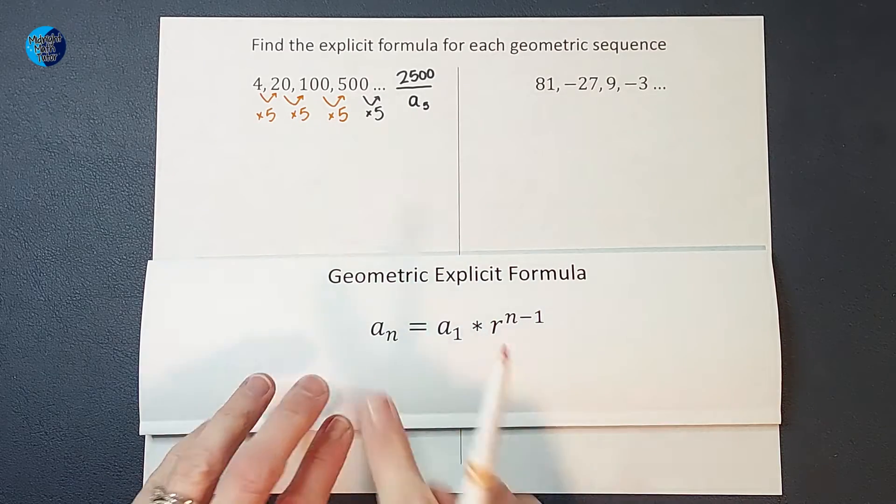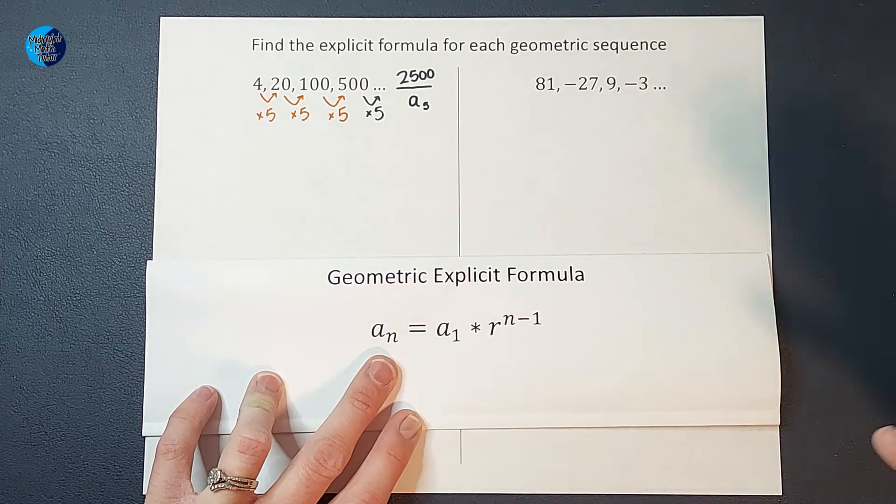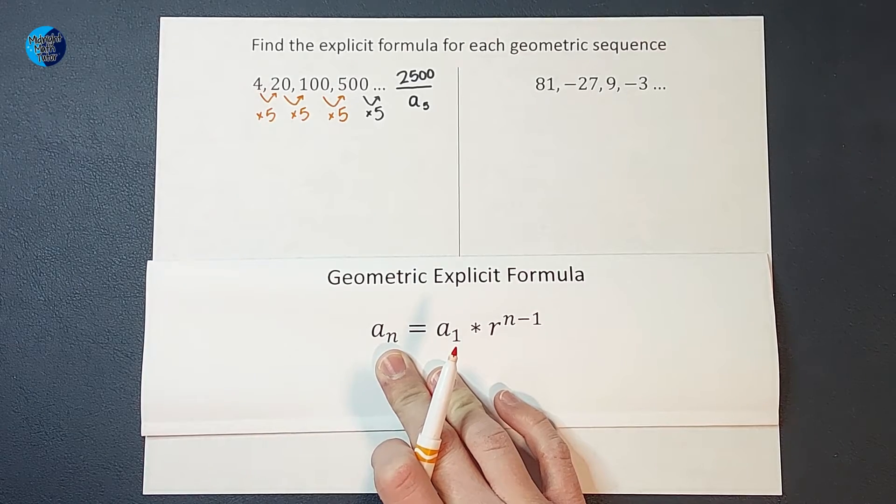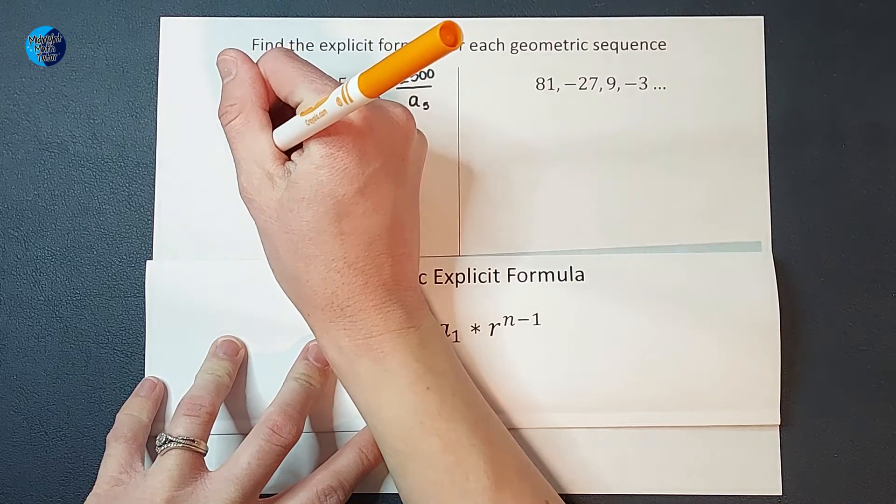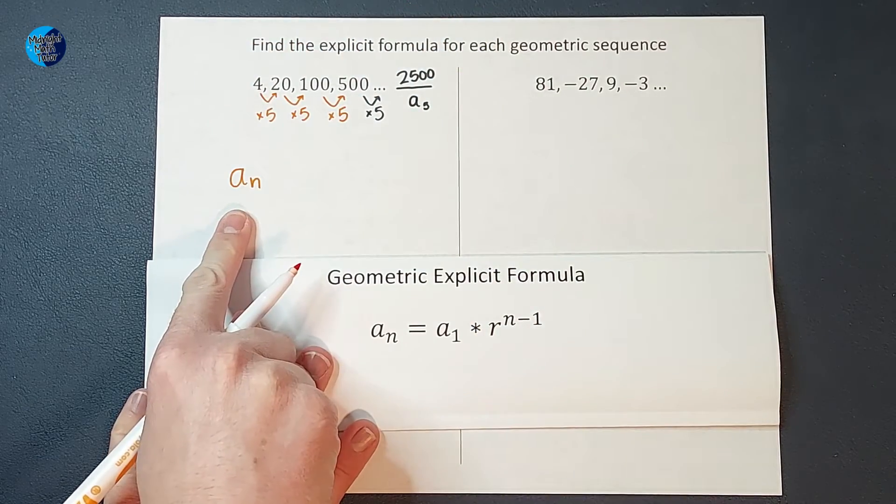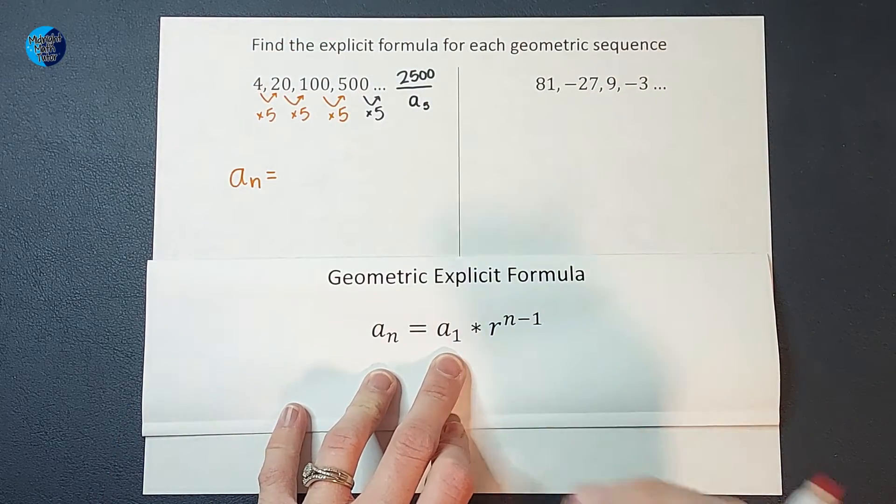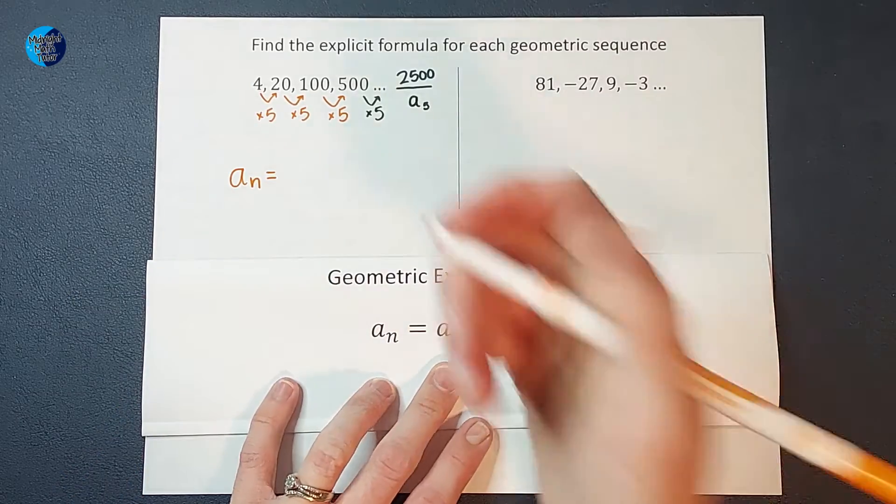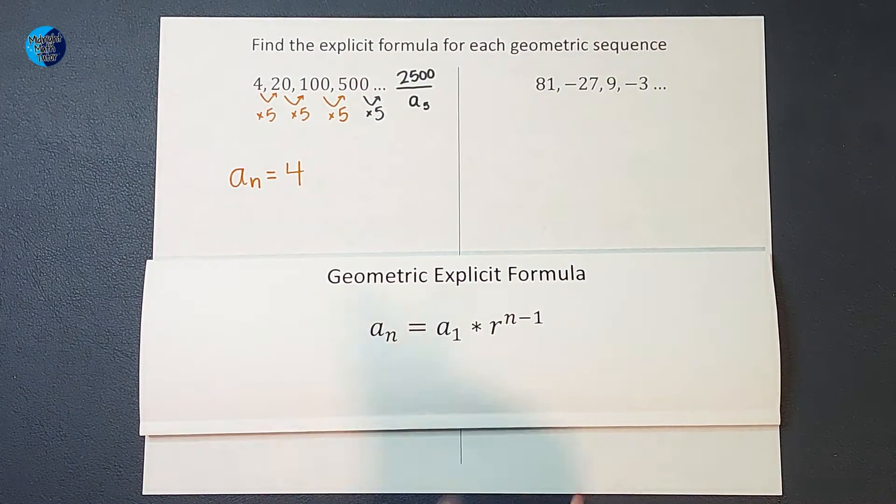This is telling me A sub N, which is another way of saying whatever number you want to find. You plug in whatever number for N to figure out, oh, I want to know the 50th. So I plug in 50 for N. So A sub N is another way of saying whatever number you want to find. That is equal to A sub 1, the first number in my sequence. So in this one, it is 4.